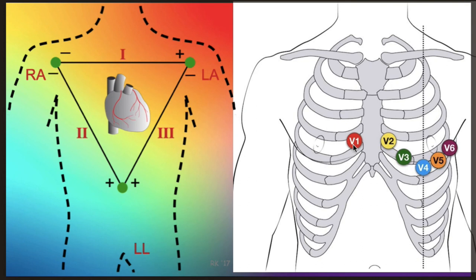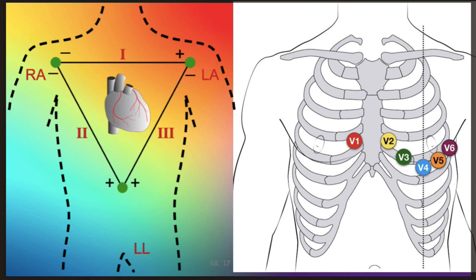Let me repeat the six chest lead positions once more. V1: fourth intercostal space, right sternal margin. V2: fourth intercostal space, left sternal margin. V3: between V2 and V4. V4: left fifth intercostal space, mid-clavicular line. V5: left fifth intercostal space, anterior axillary line. V6: left fifth intercostal space, mid-axillary line. Every word is important — you must mention right, left, intercostal space, and the specific anatomical line.